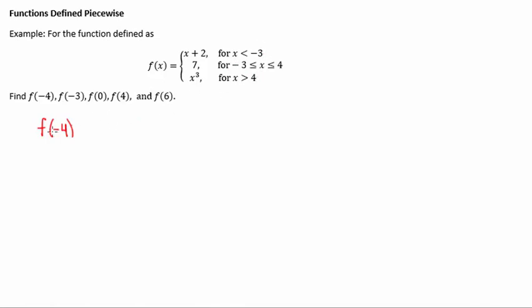Which place does negative 4 fit in? Negative 4 is less than negative 3, so we're going to put a negative 4 in where x is for our first defined function up here. Negative 4 plus 2 is negative 2, that's what f of negative 4 is. The hard part should be just figuring out which one to plug it into, otherwise it should be pretty easy.